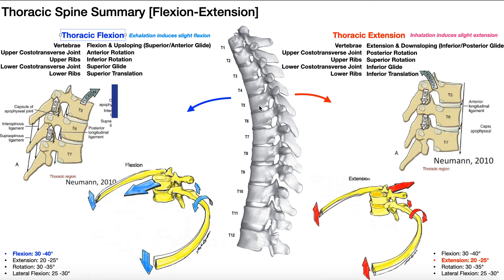Here is the thoracic spine, T1 down to T12, and hopefully we know that the ribs articulate with these vertebrae. There are 12 ribs. They all attach to the vertebra in some form or fashion. So if I have a movement of the thoracic spine as a whole, those ribs are going to in turn move in a certain way as well, just by nature that they're attached to the T-spine.